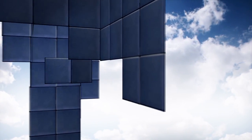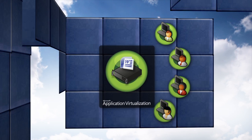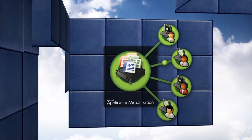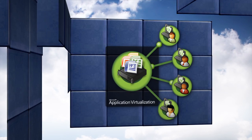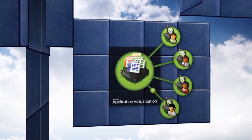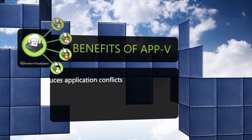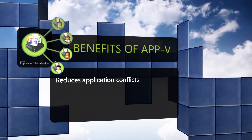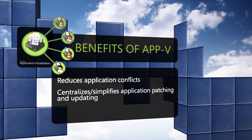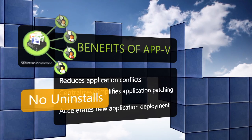AppV takes a different approach to application delivery. With AppV, applications are not installed, but instead are virtual. As such, they can be streamed to users whenever they click on the application icon. By separating the application layer from the operating system, AppV reduces application conflicts, brings patch and update management to a central location, and accelerates the deployment of new applications and updates.